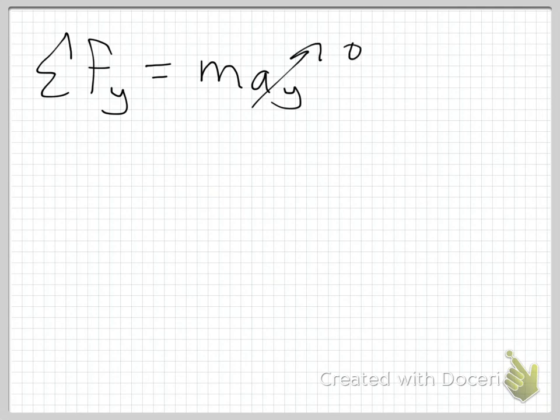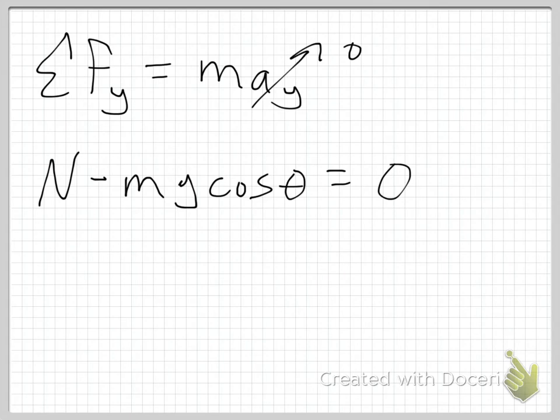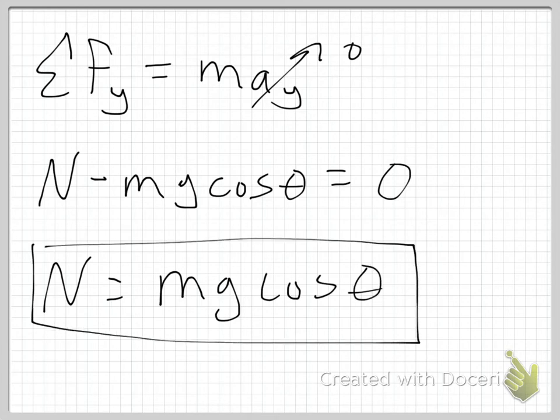So now I'm going to sum up my forces in the y direction. I said I had N, the normal force, minus Mg cosine of theta, and that's equal to zero. So that's N in yellow, Mg cosine of theta in orange, and that's equal to zero, which means of course that the normal force is going to be equal to Mg cosine theta. So that's actually the answer for part B.